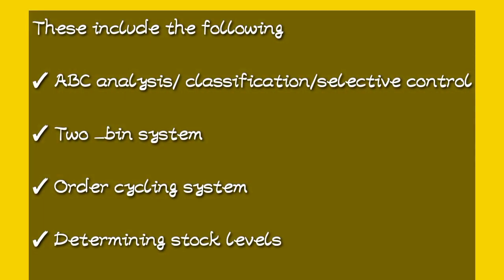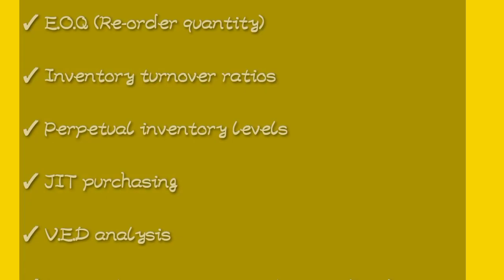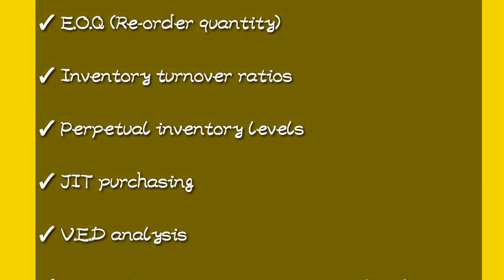There are very many, and the first one is ABC analysis, also known as classification or selective control. We have the two-bin system, the order cycling system, and determining stock levels. We have the economic order quantity technique or the reorder quantity technique.